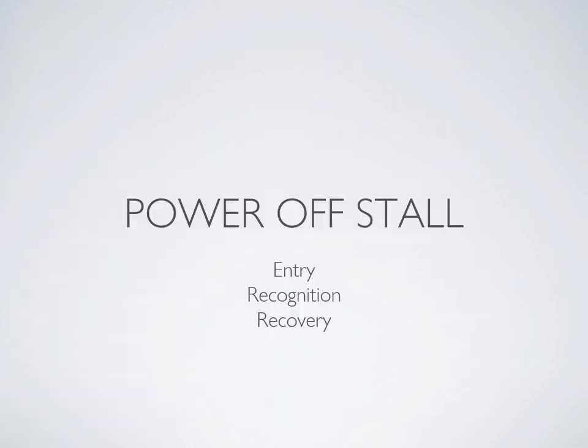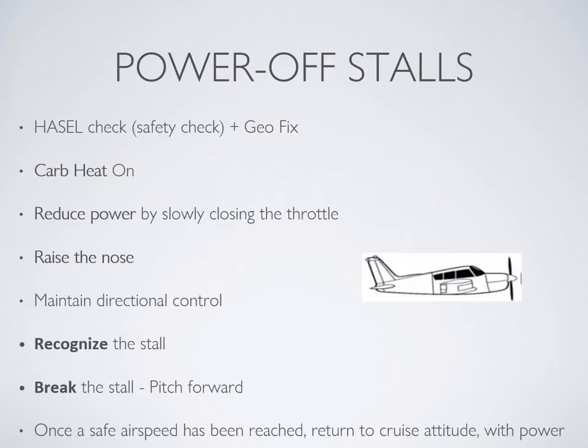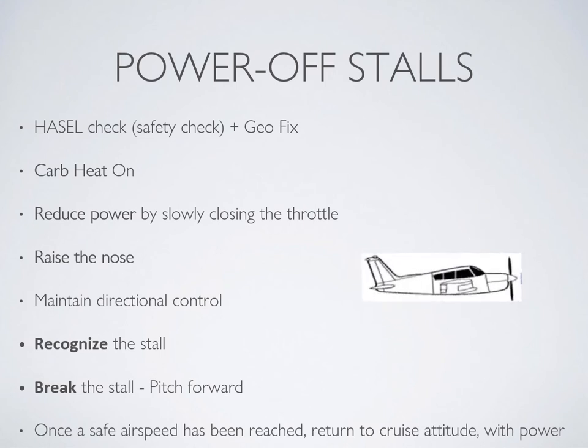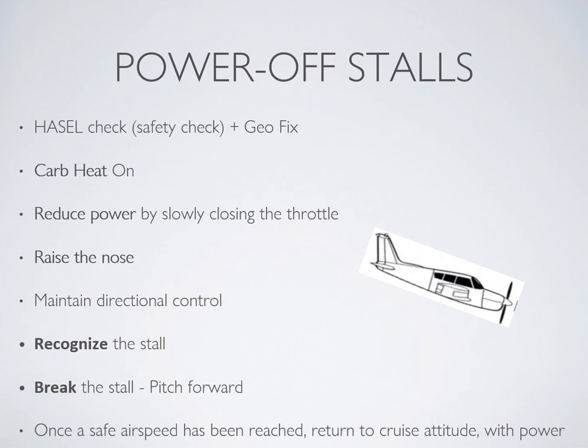Let's get into what you're going to see and do in this flight lesson. Looking at the exercise in sequence, it's going to look like this: first you do your safety check and find yourself a geofix, then you pull the carpet out, reduce power by slowly closing the throttle, raise the nose, maintain directional control, recognize the stall, break the stall by pitching forward, and once at a safe airspeed, return to cruise attitude with power.